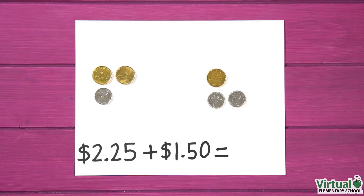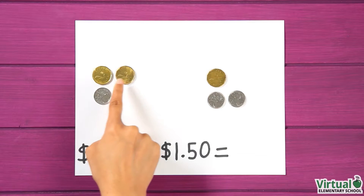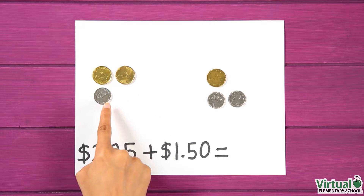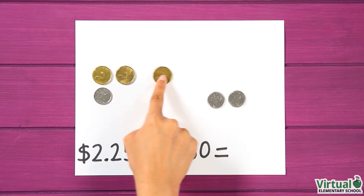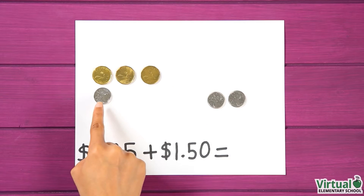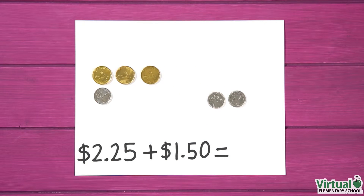Let's count on, starting with the largest coin value — the loonie. Two dollars and twenty-five cents, three dollars and twenty-five cents.